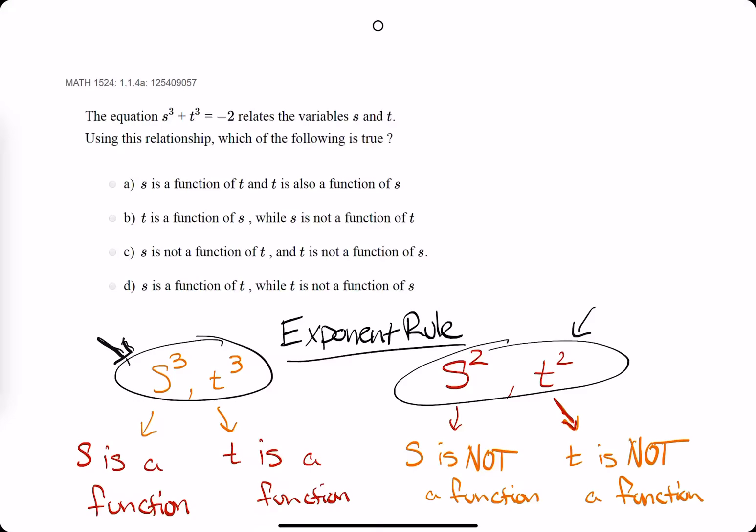So the shortcut for this is really just to look at the exponents. When you see s cubed, that indicates that s is a function of t, and if you see t cubed, that means t is a function of s.